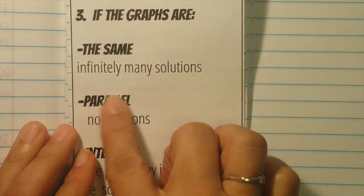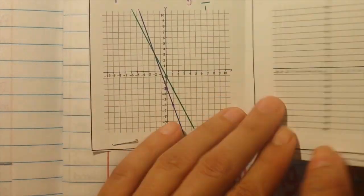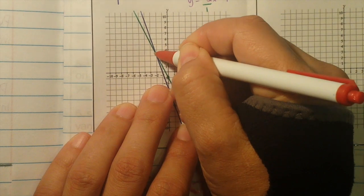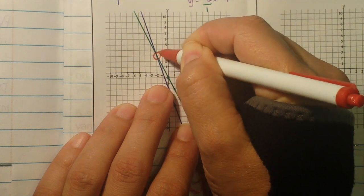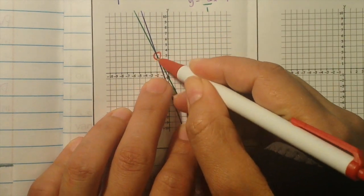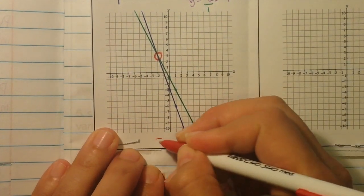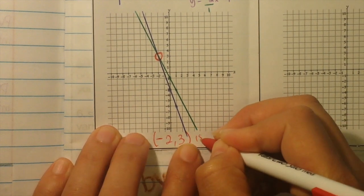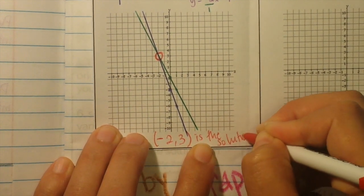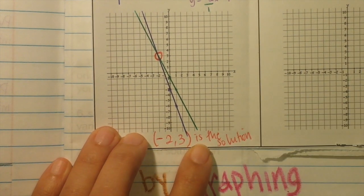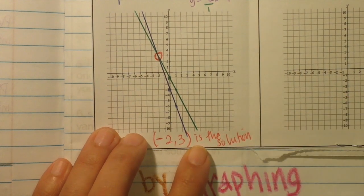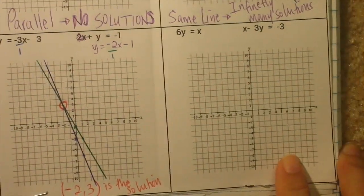The lines are not the same and not parallel — they intersect. Where the two lines intersect is your solution. Circle that point. The intersection point is negative 2, 3. So negative 2, 3 is the solution to this system of equations. Go ahead and color in what we just wrote down.